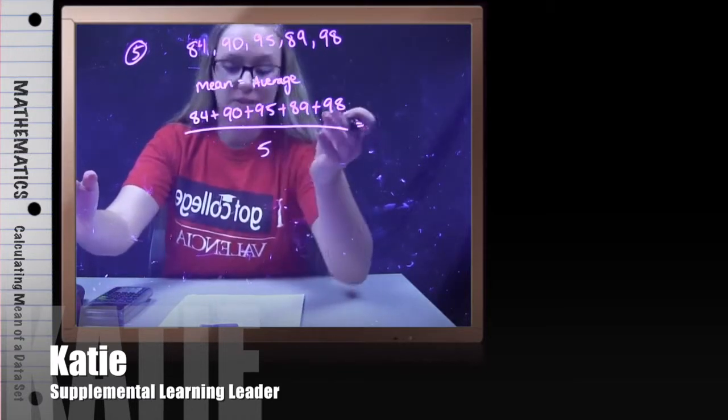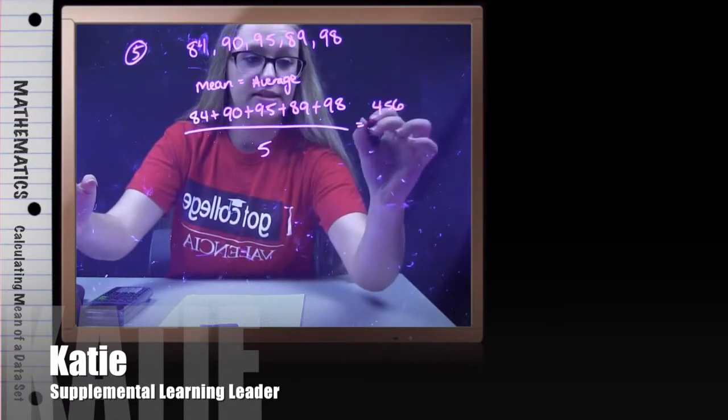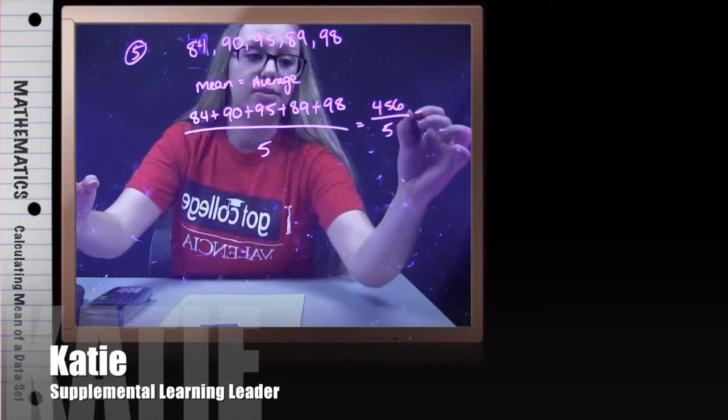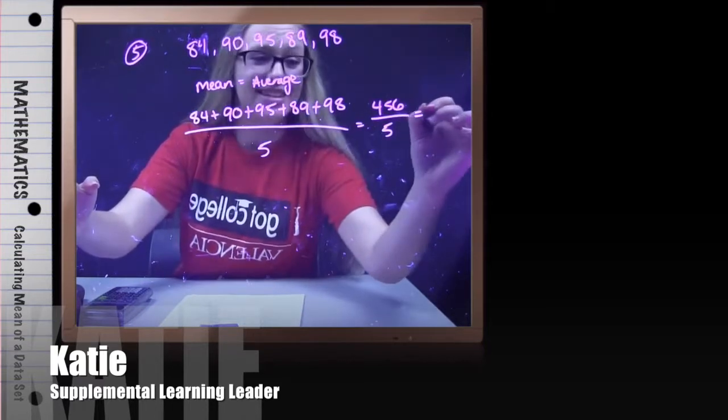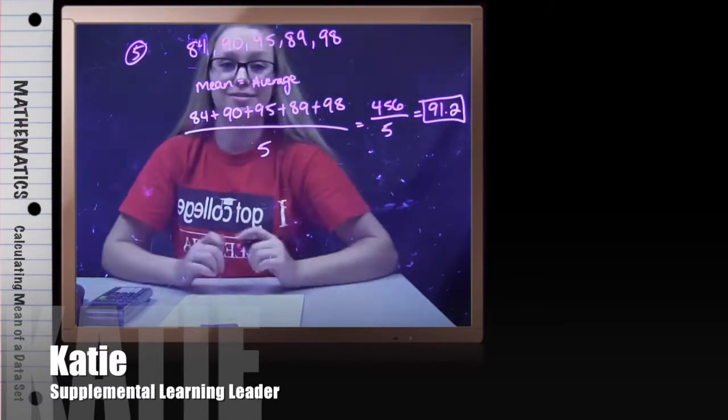And if we add all our numbers on top, we're going to get 456 divided by 5, which when we put it in the calculator, we're going to get 91.2. And that will be our mean.